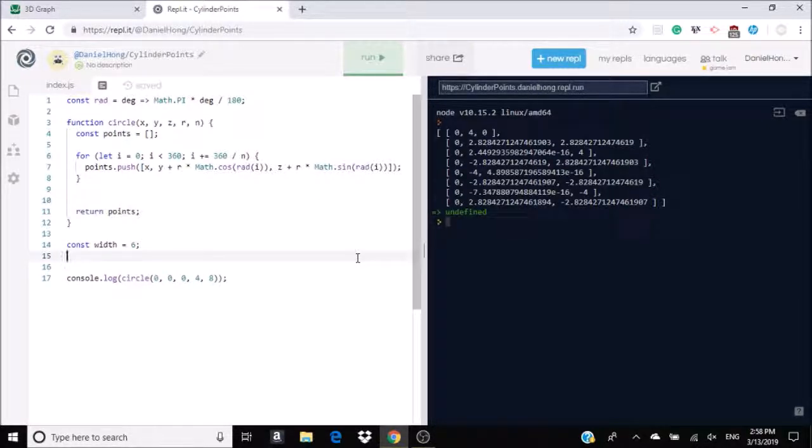So we need a cylinder, which means our left circle. Assuming that our cylinder isn't at the origin, we're going to need cylinder at negative width over 2. Cylinder at y0, z0, then let's make the radius of 4. And let's make the number of points, we can still use 8.